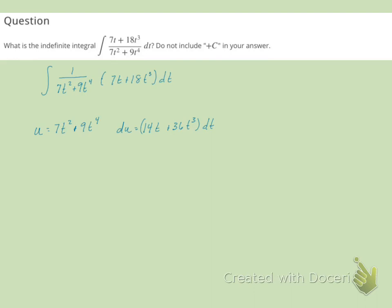I've got a 7t and an 18t cubed. So what I want to do is factor out a 2 from this binomial and I'll have du equal to 2 times 7t plus 18t cubed dt.